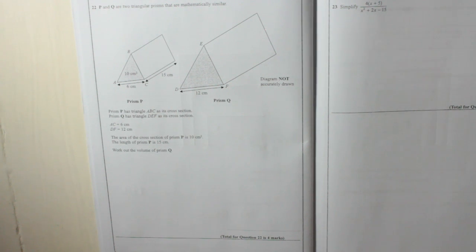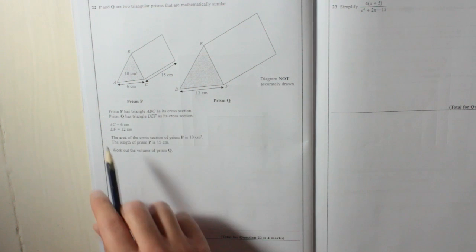Question 22. P and Q are two triangular prisms that are mathematically similar. That means all the lengths should be in the same ratio. So for example... I'll carry on first.